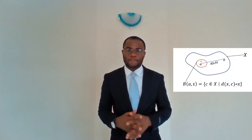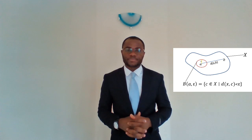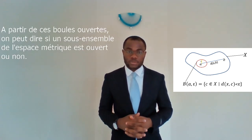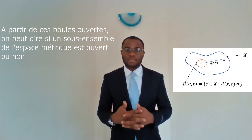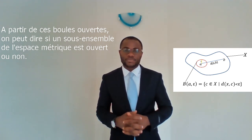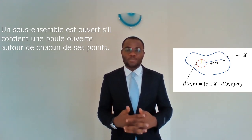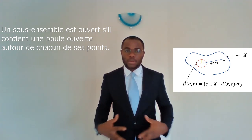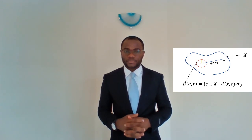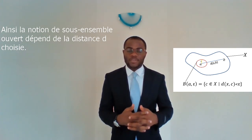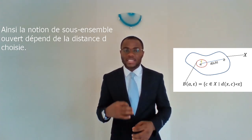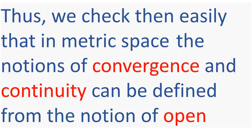And we can construct many open balls in this way. So, using this open ball, we can see if a subset of a metric space is open or not. We know a subset of a metric space is open if it contains an open ball around each of its points. Hence, the notion of openness of a subset depends on the chosen metric d. So, we can check easily that in metric space, the notion of convergence and continuity can be defined from the notion of open.